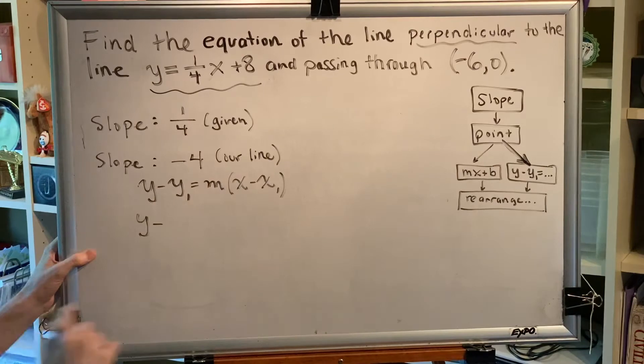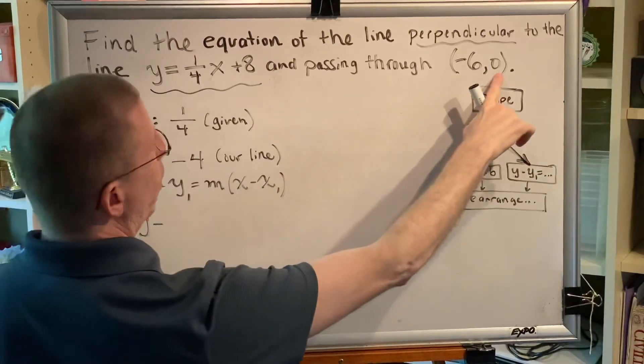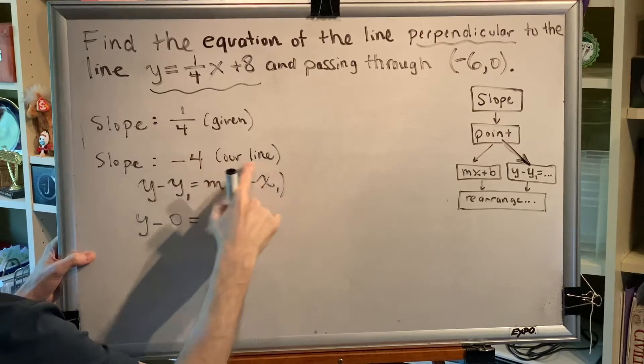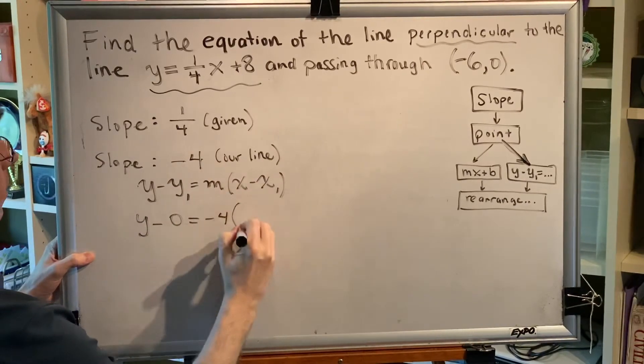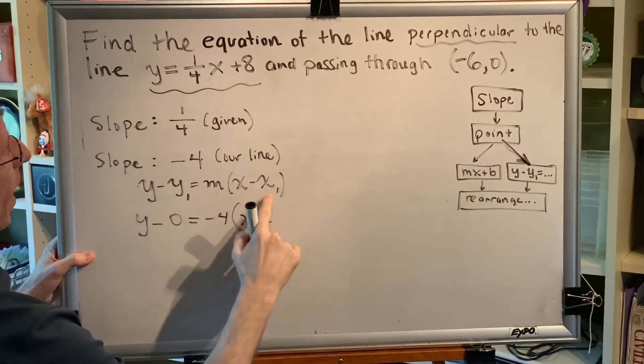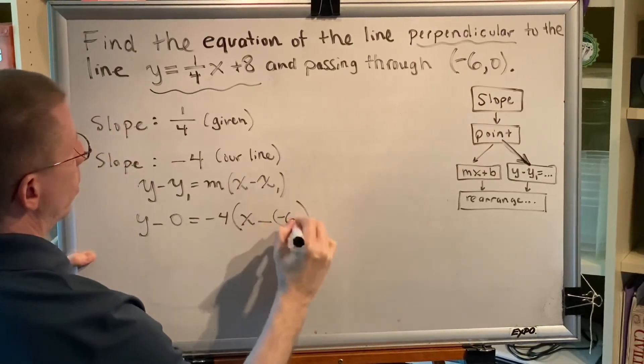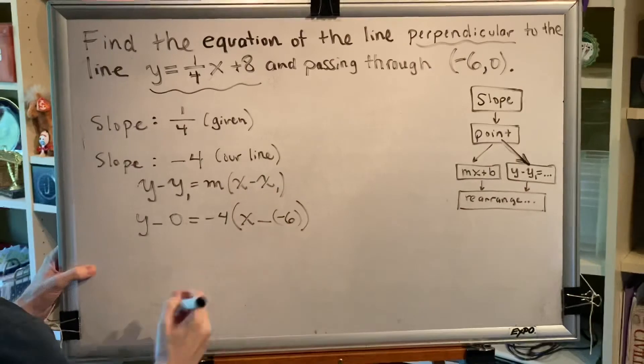So we get y minus, y1 is the y coordinate of the point, which is zero, equals m, which for our line is negative 4 times x minus x1, which is the x coordinate of our point. Subtracting a negative is the same as adding,